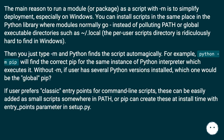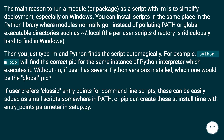The main reason to run a module or package as a script with `-m` is to simplify deployment, especially on Windows. You can install scripts in the same place in the Python library where modules normally go, instead of polluting `PATH` or global executable directories such as `/usr/local`. The per-user scripts directory is ridiculously hard to find in Windows. Then you just type `-m` and Python finds the script automatically.